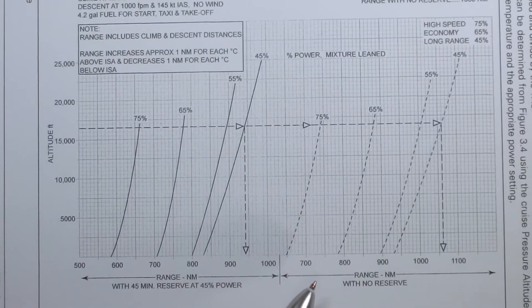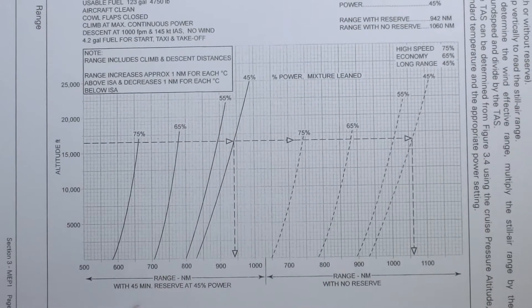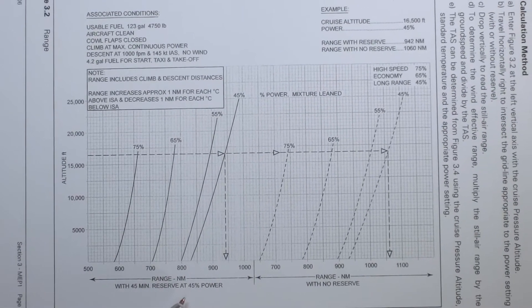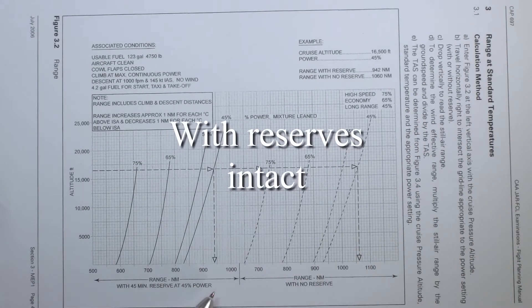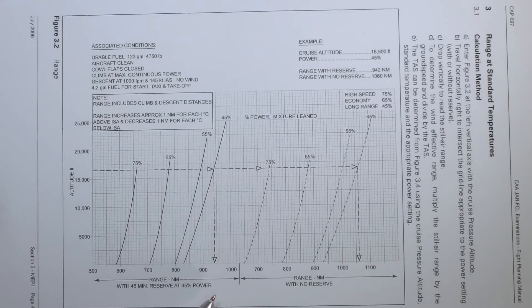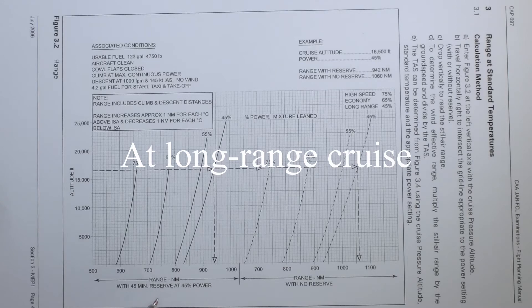This chart is divided into two sections. The first section on the left gives us range with 45 minutes reserve. If we flew an aircraft this range, we'd have enough fuel to last another 45 minutes. So it's distance plus 45 minutes of flight time at long range cruise.